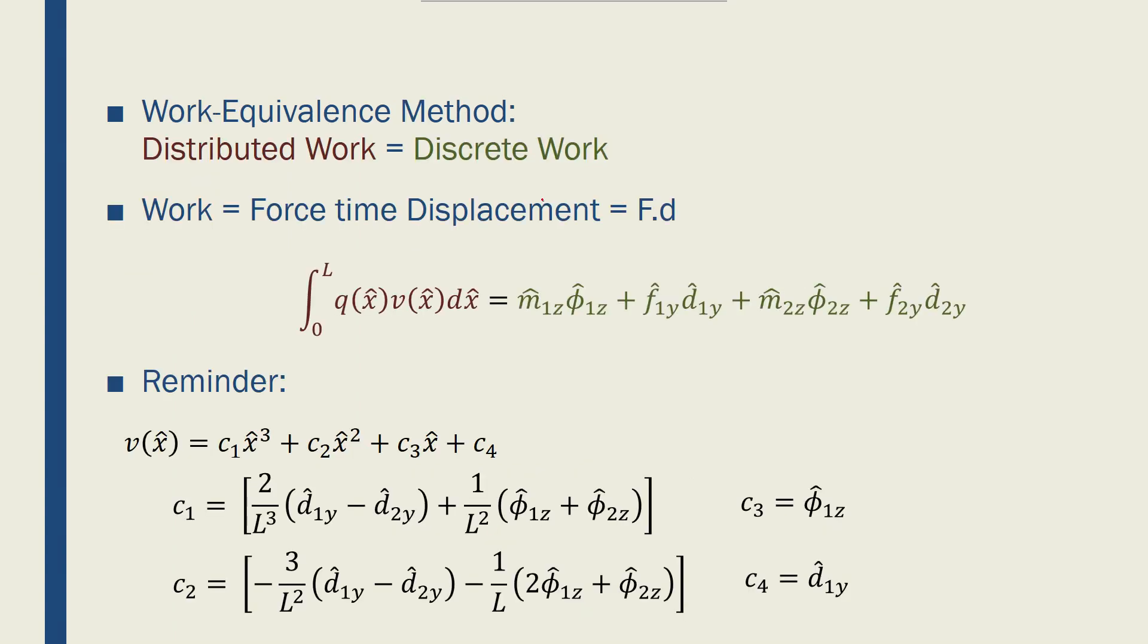One method to solve beams with distributed forces is called work equivalence method, which means distributed work is equal to discrete work. Before we describe what each of these works are, let's talk about what work is. A work in mechanical engineering, or in physics, is force times displacement, or F·d.